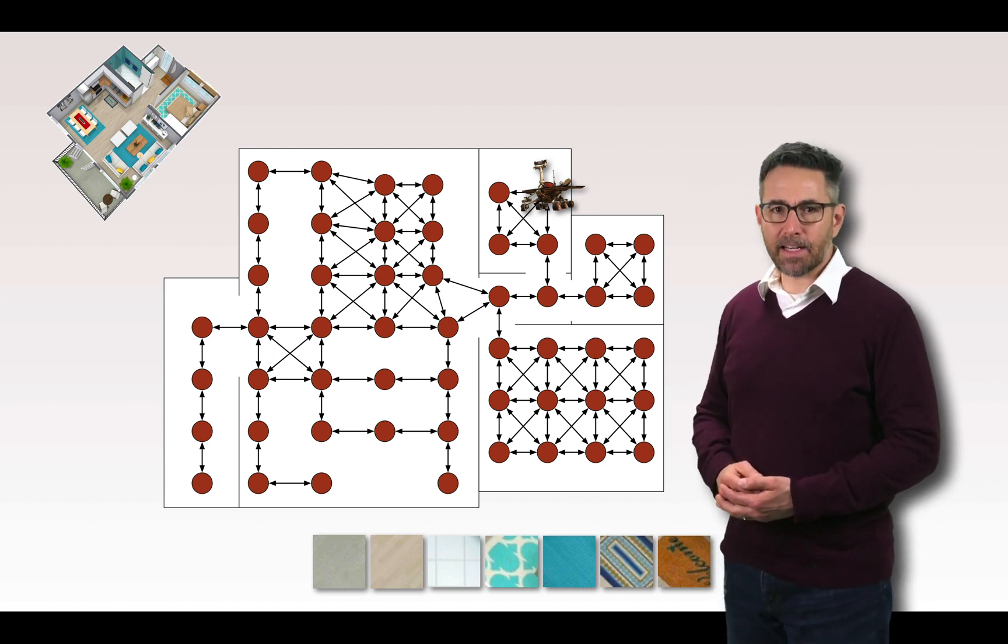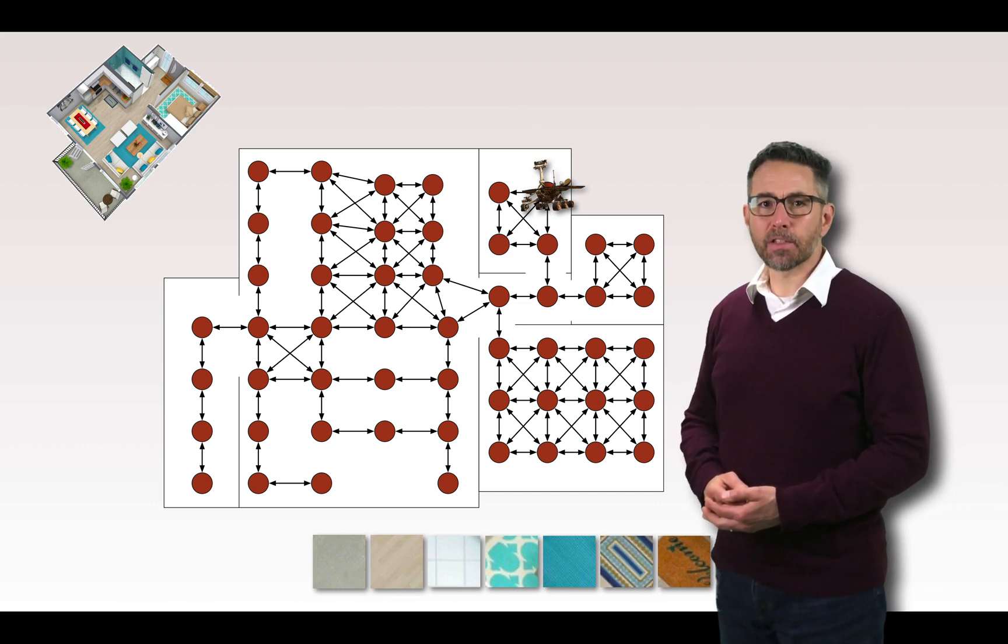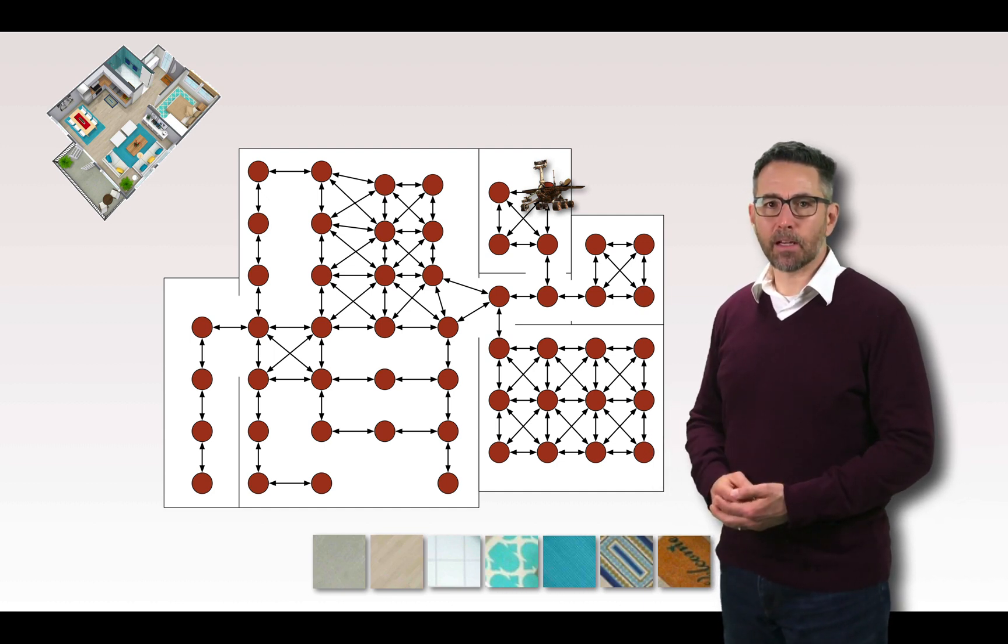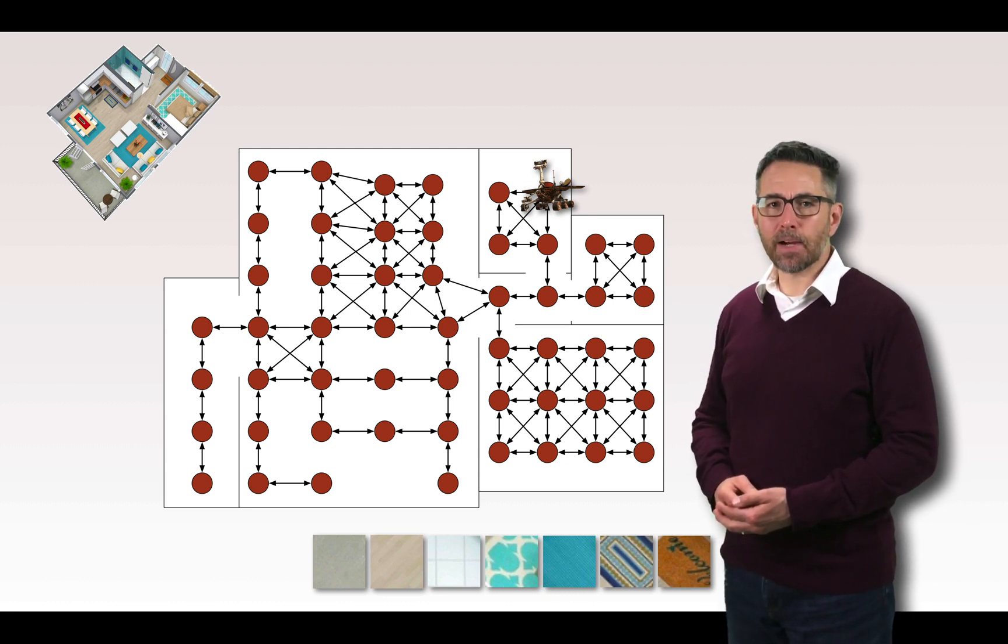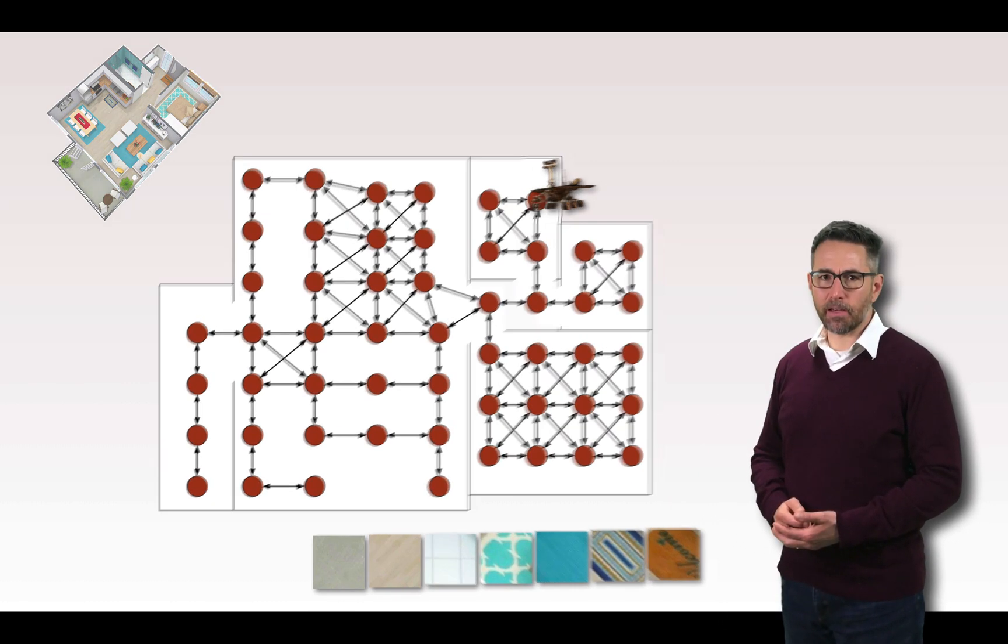It can move from one state to another according to the lines that connect them. When it's in each one of the states, it observes the floor and has a variety of different floor colorings that it can observe. The robot has to figure out where it is by observing the floor colors and keeping track of how it's moved throughout the world. Together this forms all the components of a hidden Markov model.